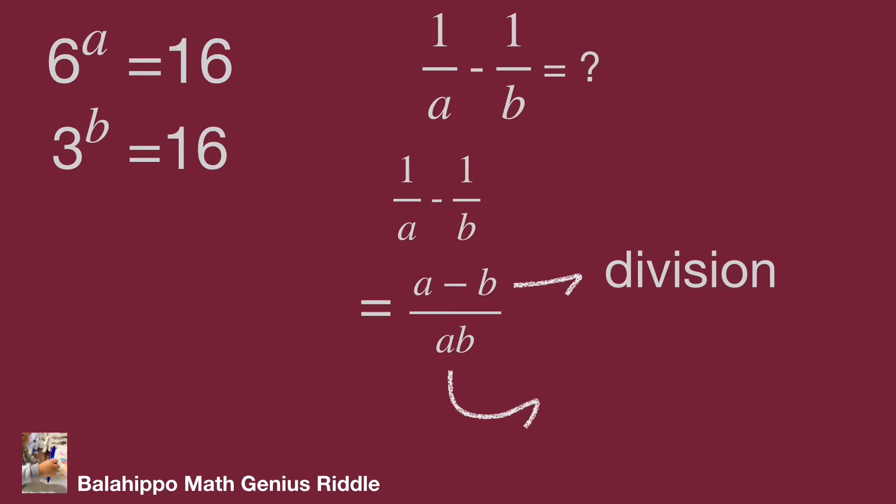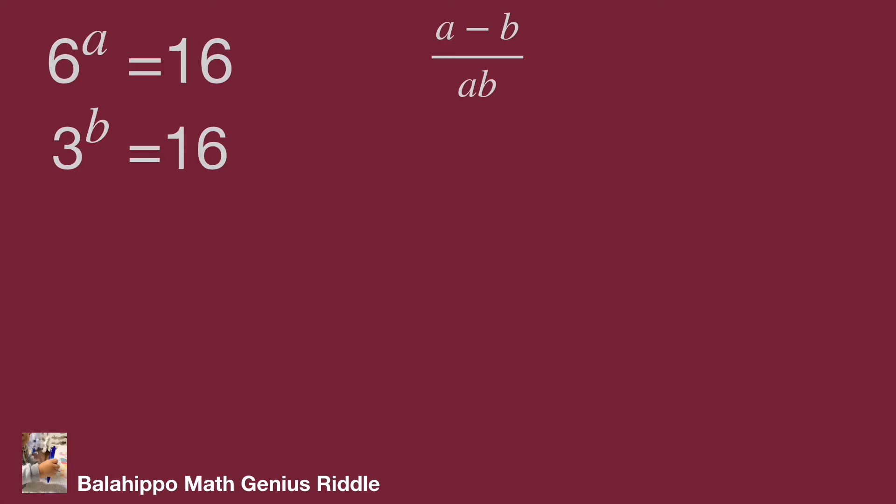We can get a, b value. That's the second direction to generate the a, b value. What can I get from powers? Therefore, let's make the connection to 6 power of a equal to 16 and 3 power of b equal to 16.